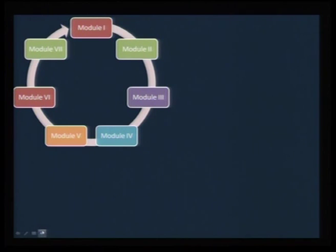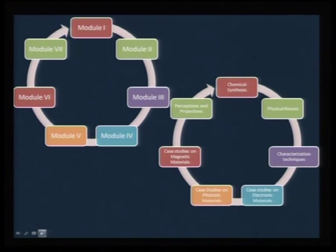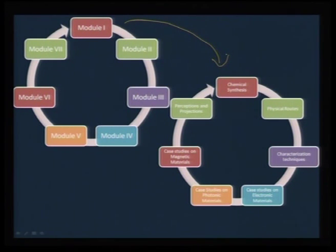This materials chemistry course will have 7 modules, module 1 to module 7. Module 1 will have more emphasis on chemical synthesis, because materials chemistry underlines the importance of synthesis and how we go about with a rational synthesis for a particular molecule or material. We will look at chemical synthesis in greater detail in the very first module.